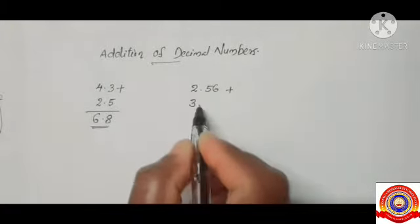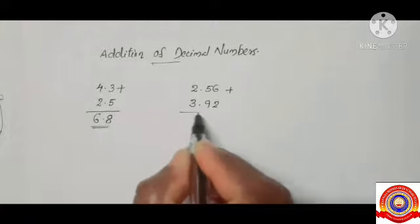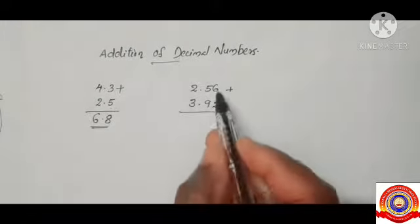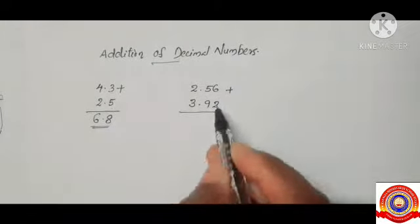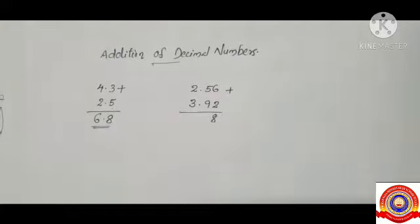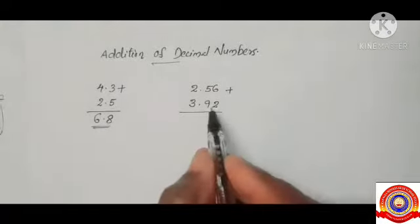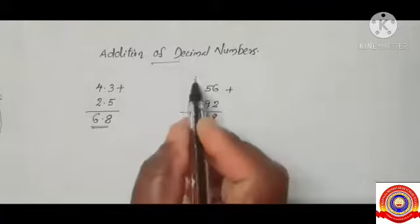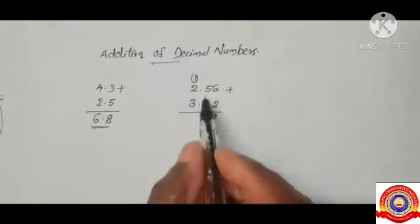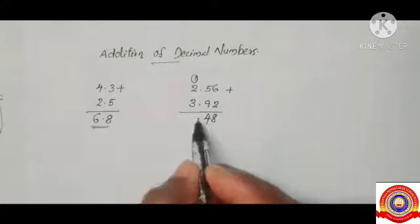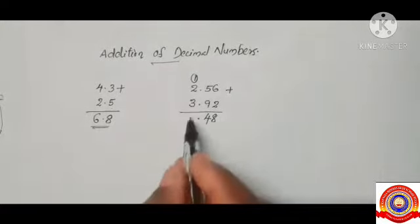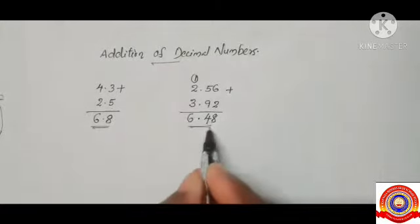The second question is 2.56 plus 3.92. From the decimal part: 6 plus 2 is 8, then 5 plus 9 is 14 — write 4 and carry 1 to the whole part. Then 1 plus 2 plus 3 equals 6. So the answer is 6.48.